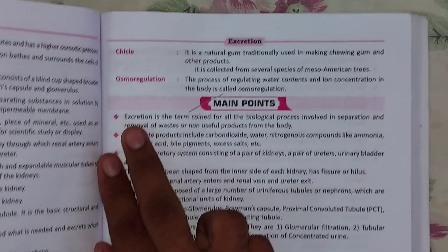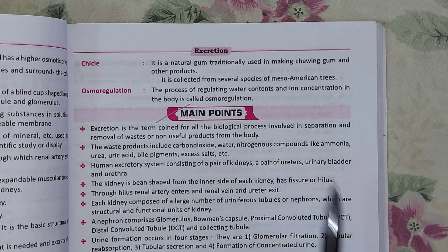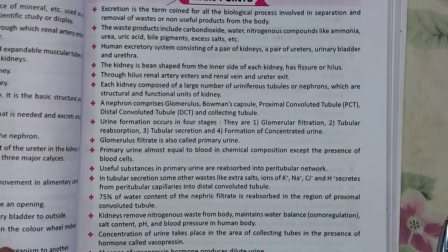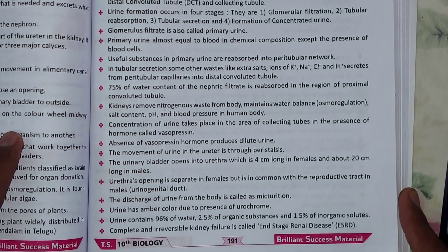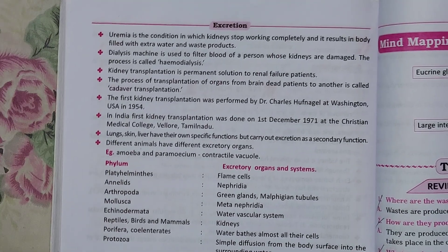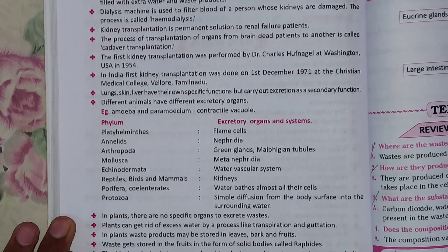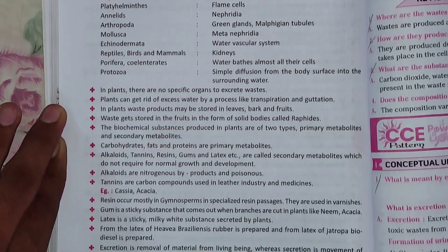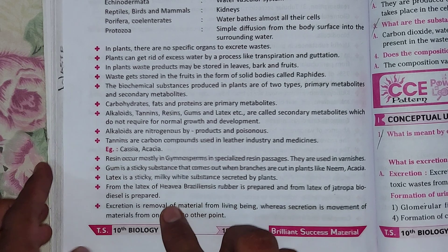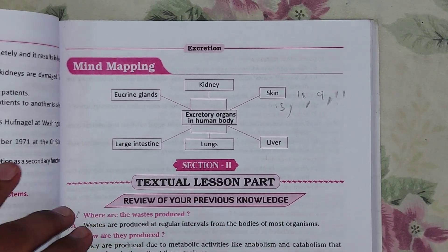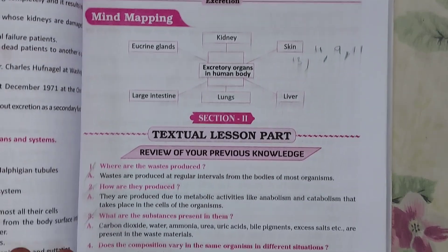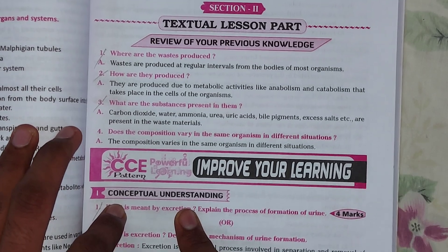Up to here we have the keywords. After that we have some main points — let's see those as well. Up to here we have the main points. After that we have a mind mapping section. You can see the mind mapping here, and in the second section we have the textual lesson part with a few questions.